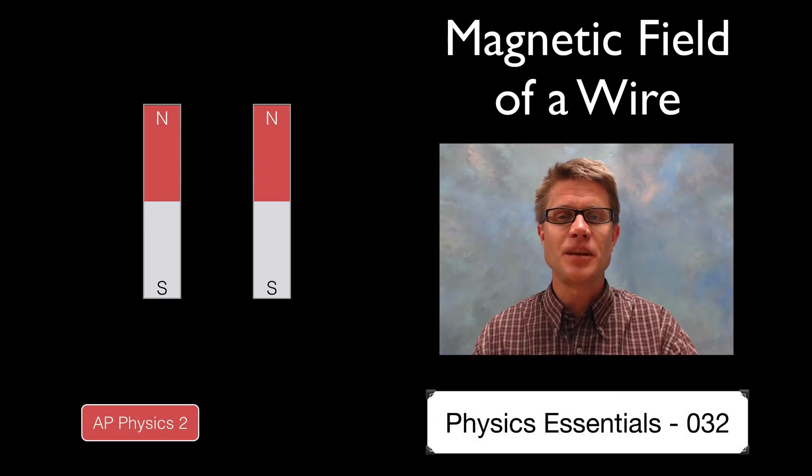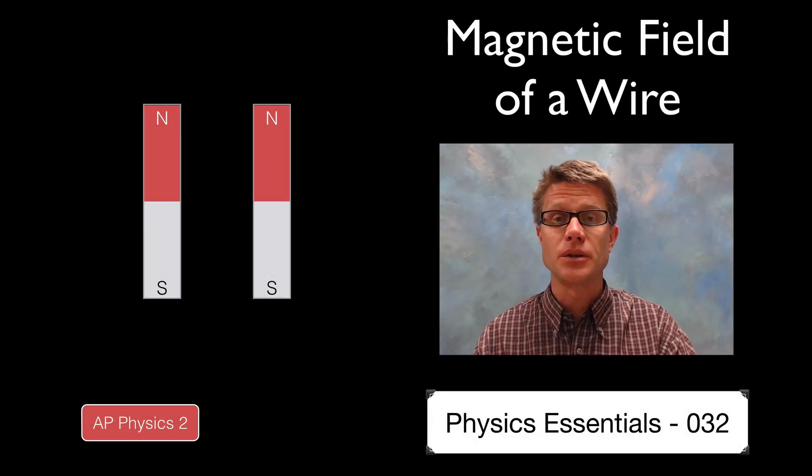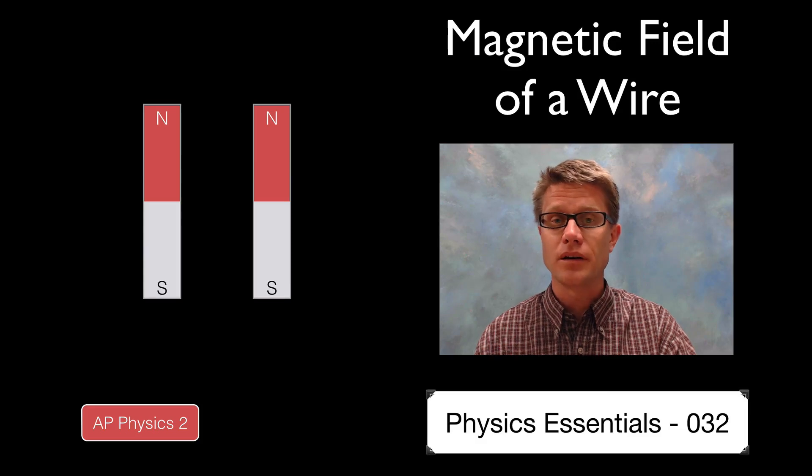Hi, it's Mr. Andersen and this is AP Physics Essentials video 32. It's on the magnetic field of a wire.